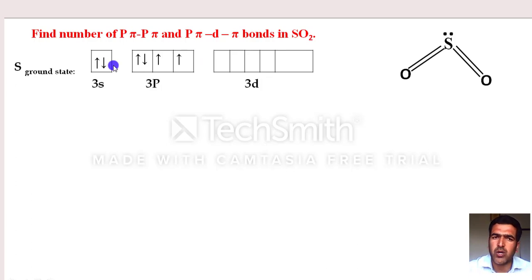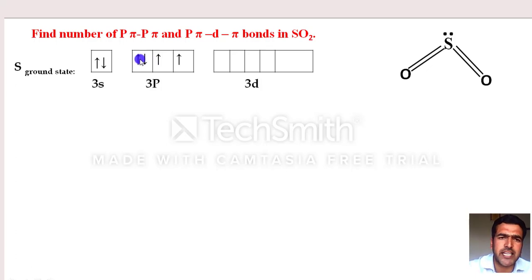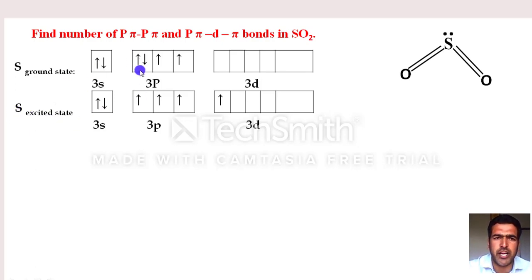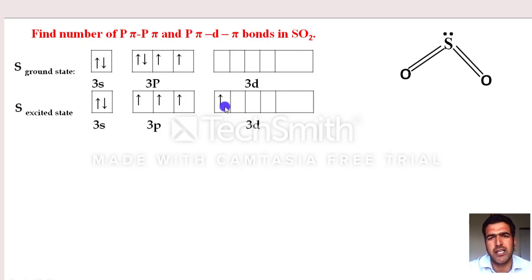We know a covalent bond is formed when two half-filled atomic orbitals overlap. So we excite one electron from the p orbital into the d orbital. The electronic configuration of sulfur in the excited state becomes 3s¹, 3p³, 3d¹ — giving us 1+3 = 4 half-filled orbitals. Now we have 4 half-filled orbitals to form 4 bonds.